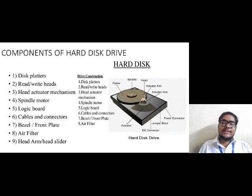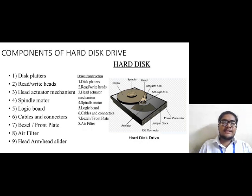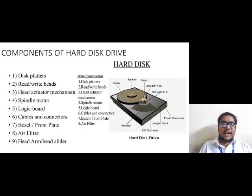Now let's discuss the components of the hard disk drive. There are a total of nine components: disc platters, read/write heads, head actuator mechanism, spindle motor, logic board, cables and connectors, bezels, front plate, air filter, and head arm or head slider.